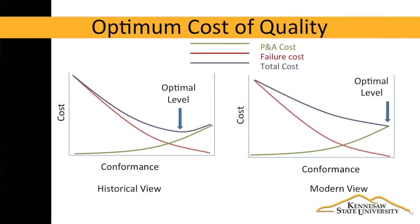But there's a newer view. The more modern view suggests that the optimum level of quality is 100% good quality. In this model, the total costs continue to decline until we reach 100% good quality.